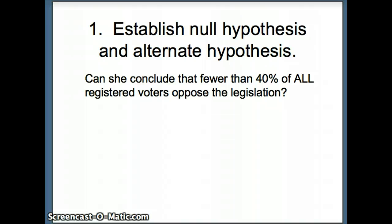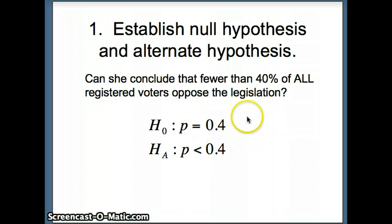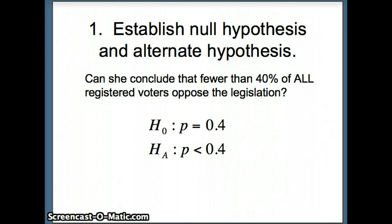First, we establish the null and alternate hypotheses. The null hypothesis must include an equal sign and always contains a parameter. So H₀: P = 0.4. She wants to conclude that fewer than 40% oppose the legislation, so the alternate hypothesis is what she wants to show: Hₐ: P < 0.4. This will be a one-tail test.